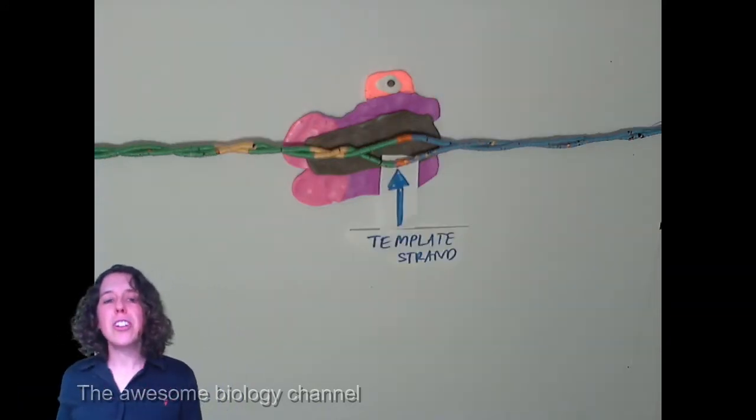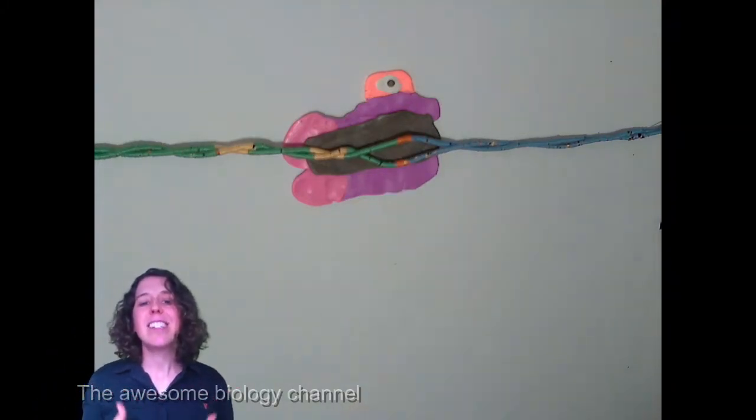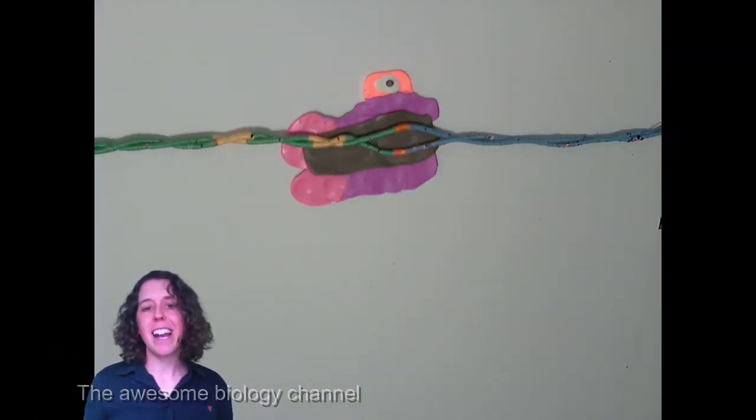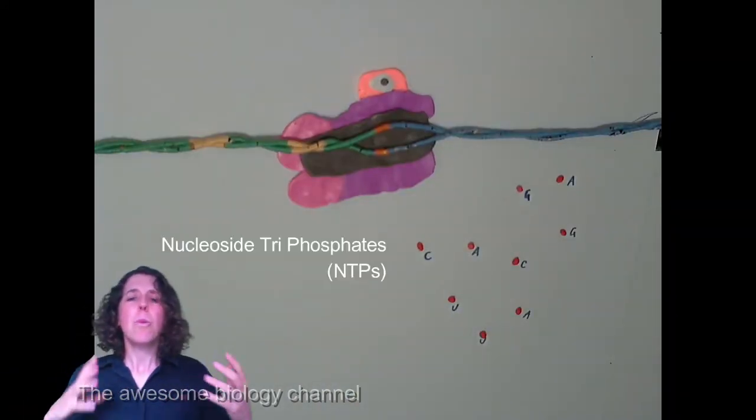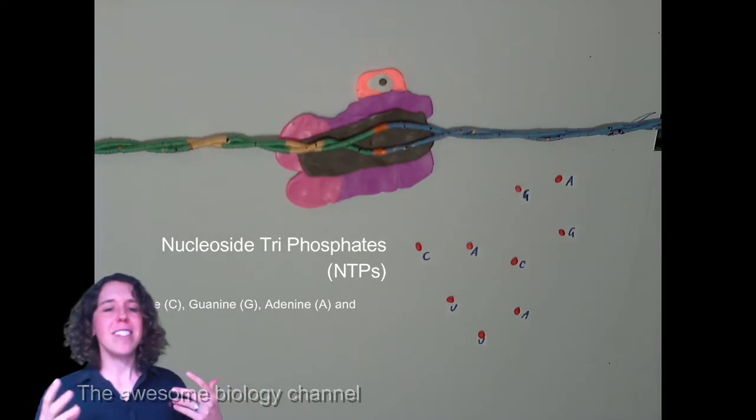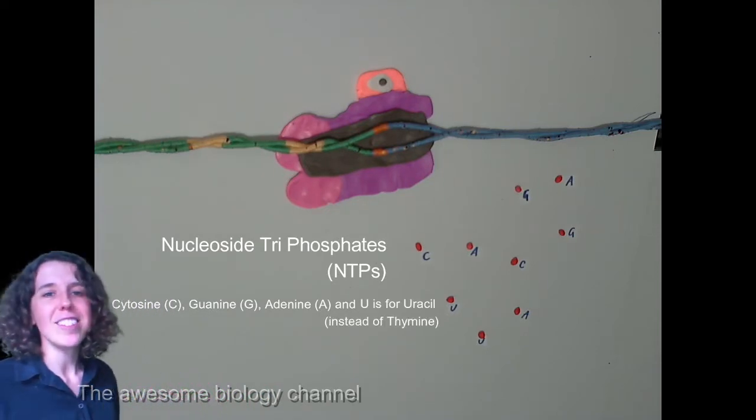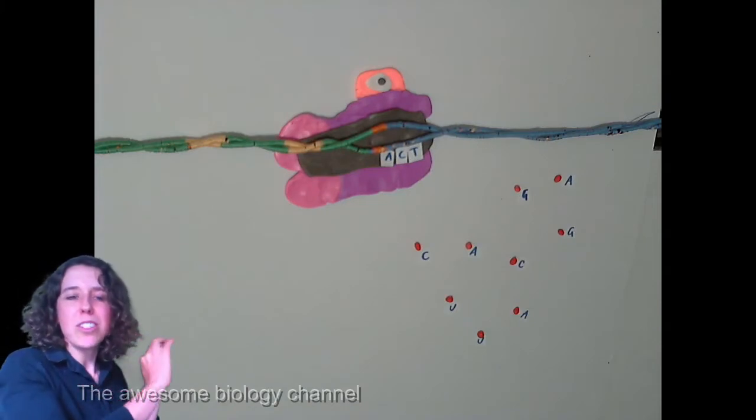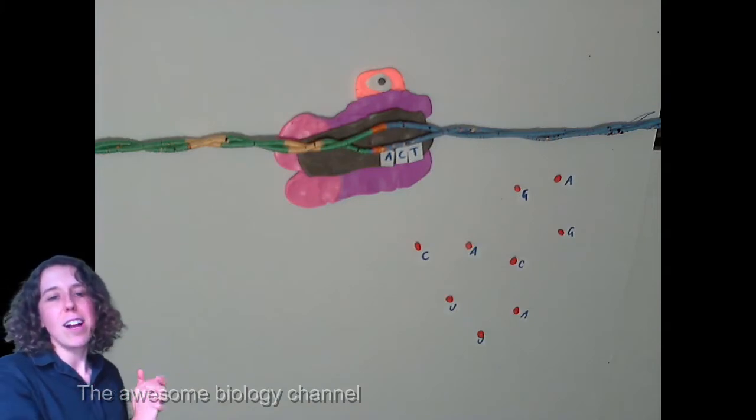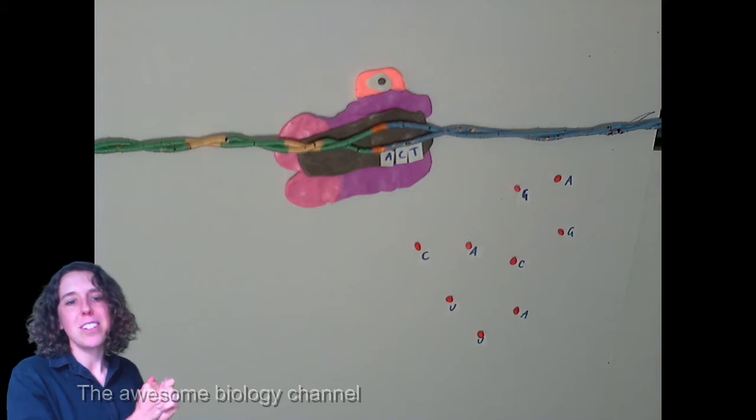Now just for what I'm going to show you next, that bottom strand here is the template strand of DNA. So right now we're at the RNA start site. Just imagine in the cell, we've got all of these bases around, these nucleoside triphosphates, the C's, the G's, the A's, and the U's. And imagine our actual sequence on the DNA, let's say it starts with ACT, the first three nucleotides.